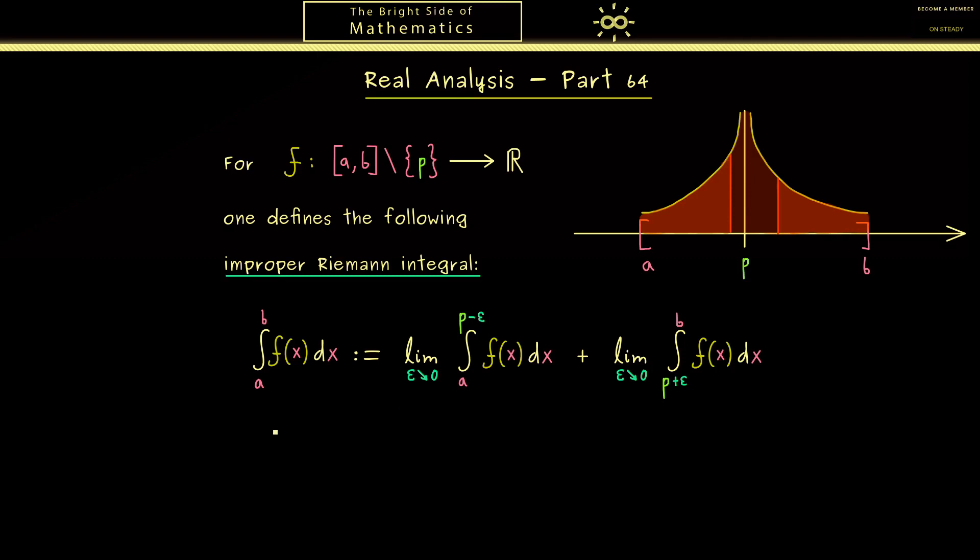Therefore, to make it clear, these two epsilons here are independent of each other. Therefore maybe we should rename them. So the first one is epsilon 1 and the second one epsilon 2. So you should always remember we actually have two limits here. Okay, then I would say let's look at an example.